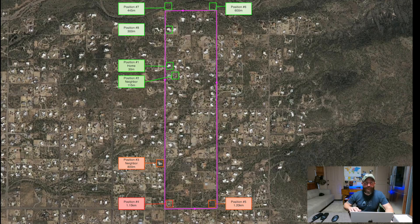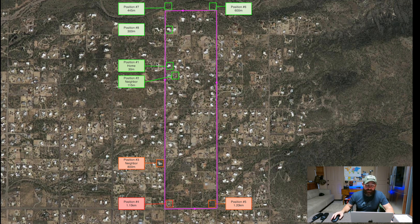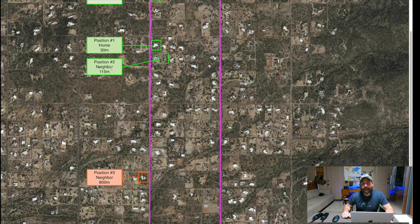I wanted to annotate an aerial photograph of my neighborhood to aid in visualization for all of the videos. I started over here at position one and then worked my way south, then east, then north, west again, and then south until I returned to the TOC. Position one was at a distance of 30 meters from my wife — it was mostly a radio check, that was the intro clip. Then I moved to position two, which was my first neighbor, about 115 meters from my location.